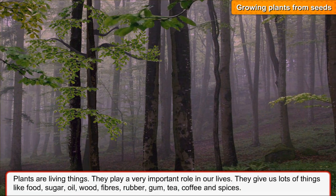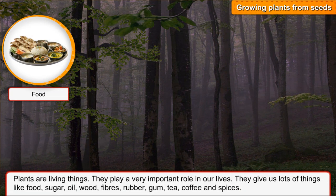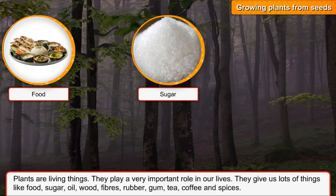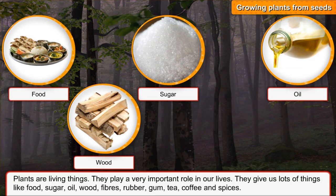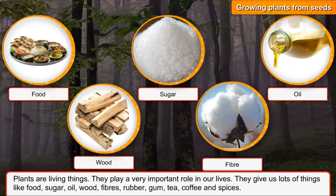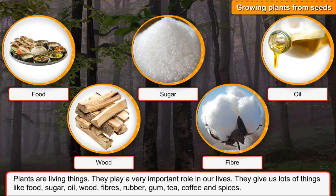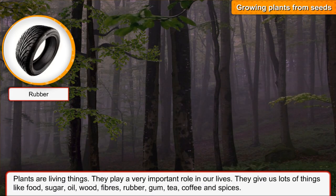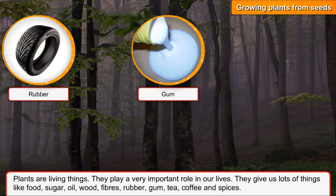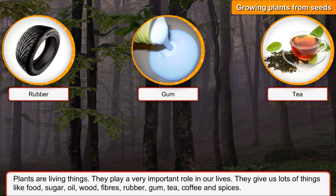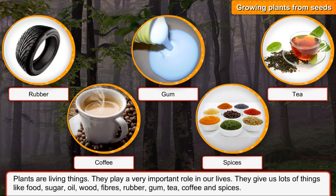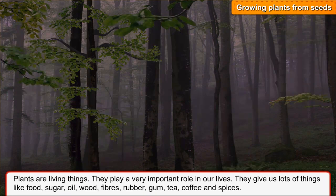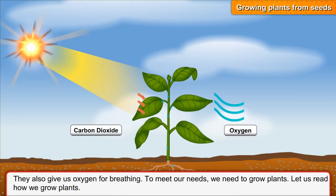They give us lots of things like food, sugar, oil, wood, fibers, flowers, rubber, gum, tea, coffee and spices. They also give us oxygen for breathing.